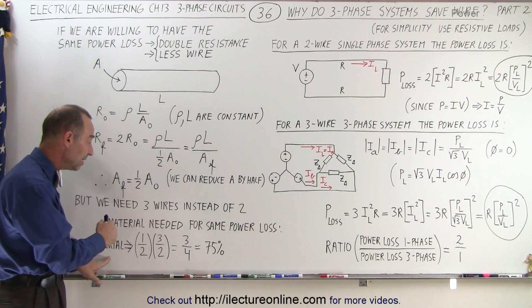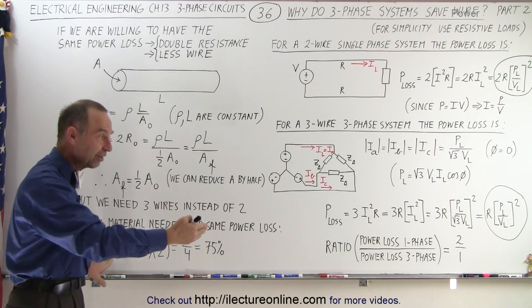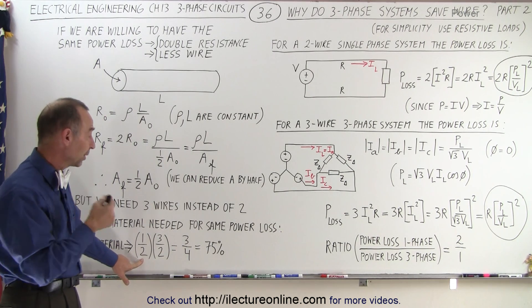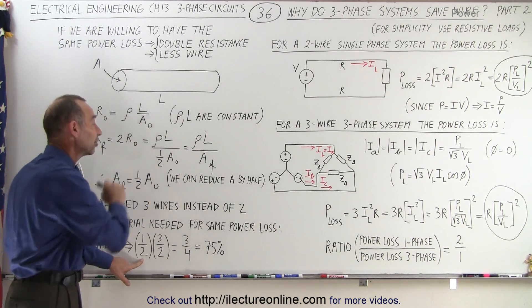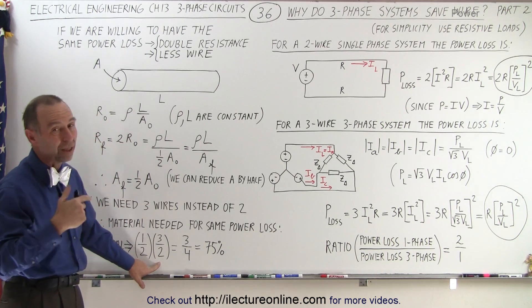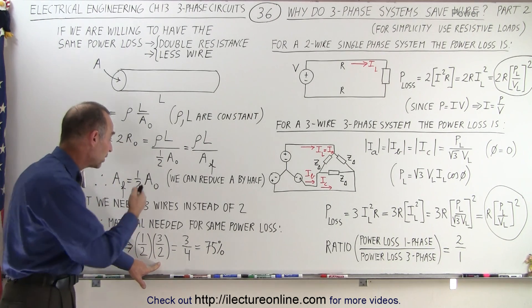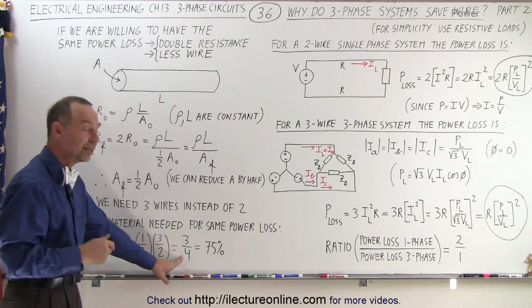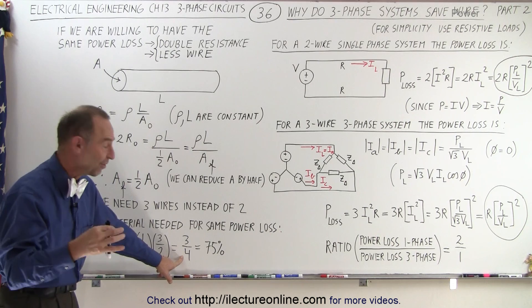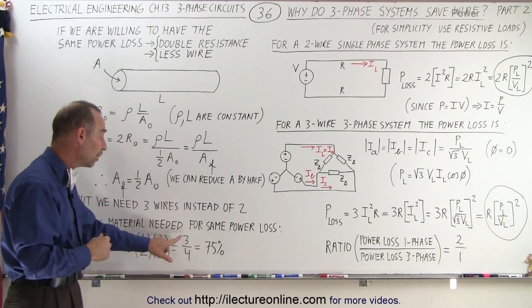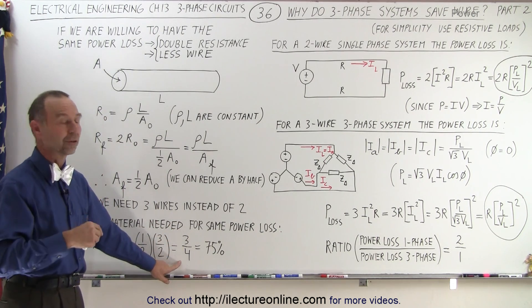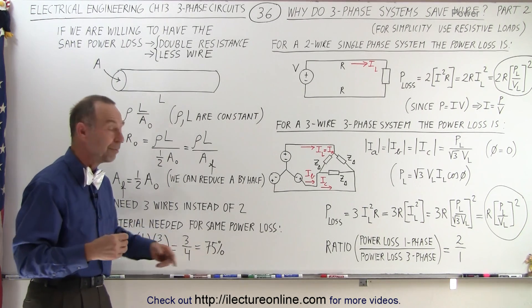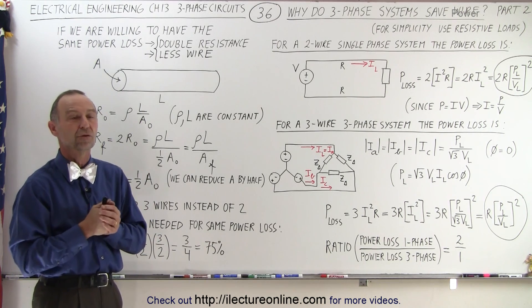So finally, the amount of material we're going to need for a three-phase system with the same power loss as a one-phase system: we only need half as much material because we only need half as much of the cross-sectional area, but we need three to two amount of wires. When we multiply that together, the amount of material we're going to need for a three-phase system versus a one-phase system is three-quarters of the original material. We only need 75%, so we have 25% savings on material used.